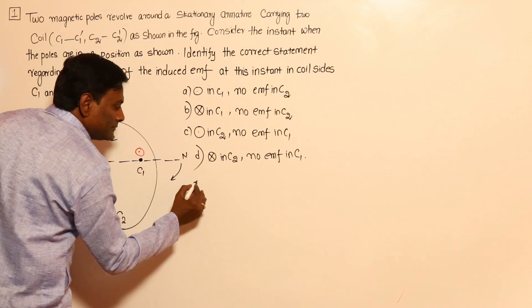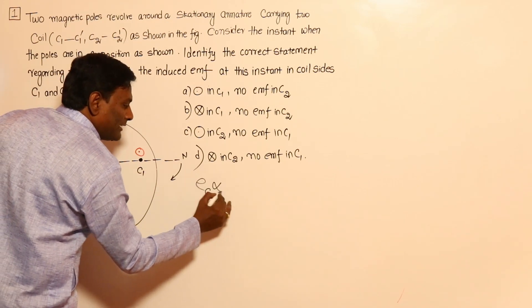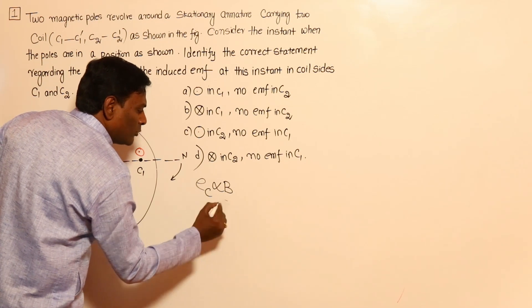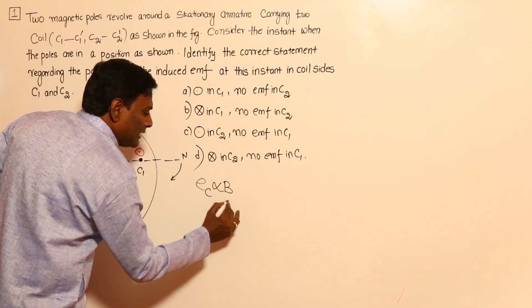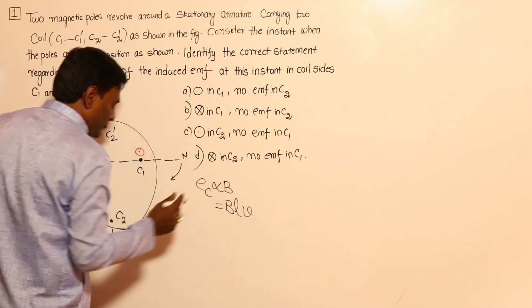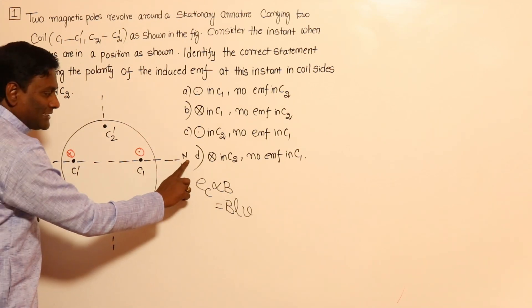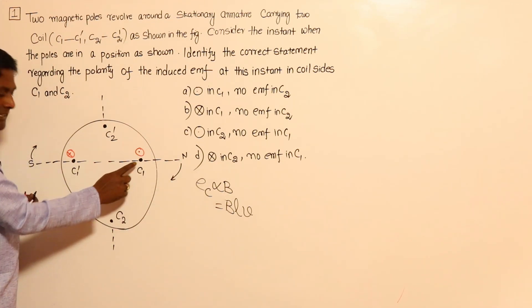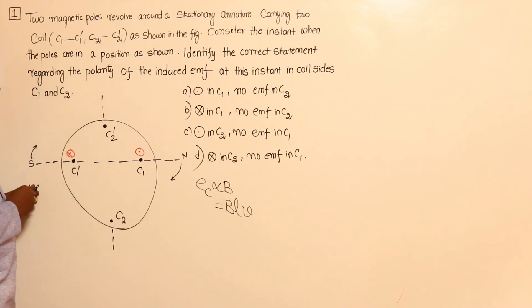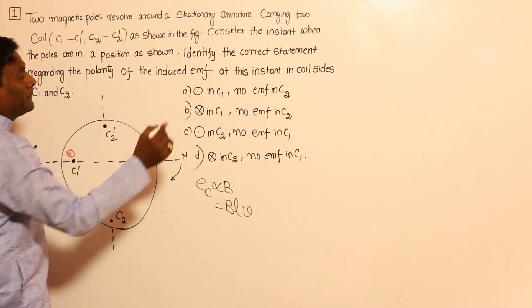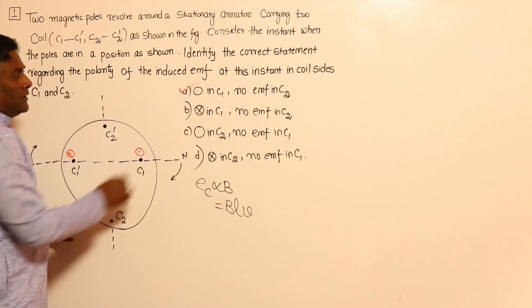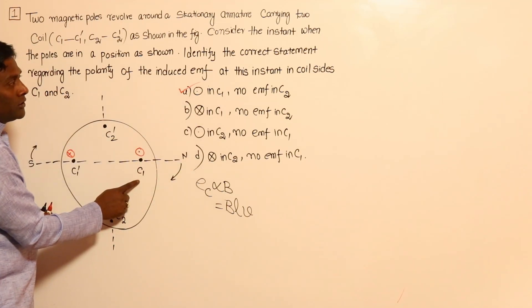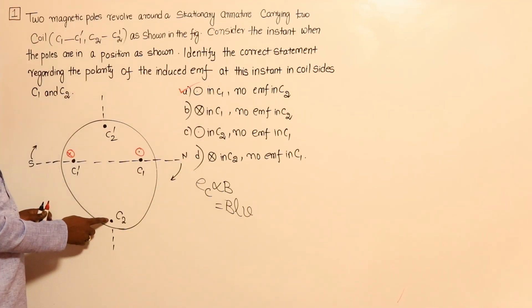Induced voltage in a conductor is directly proportional to flux density because induced voltage equals BLV. Flux density is maximum at the pole center, so induced voltage will be maximum there. When the poles are at position A, flux density at C2 and C2' is zero, so there will not be any induced voltage in C2. Answer: dot in C1, no EMF in C2. Problem solved.